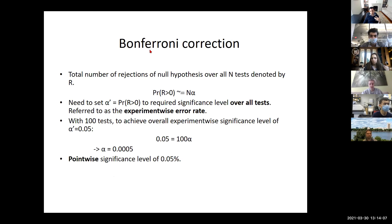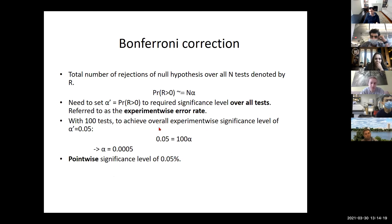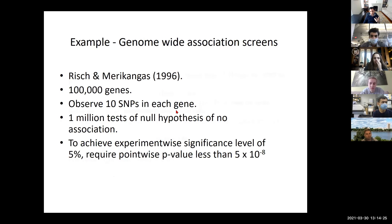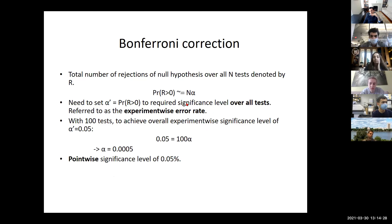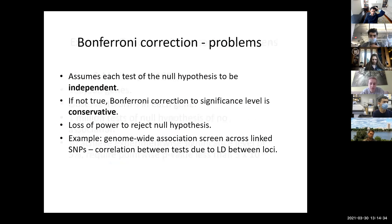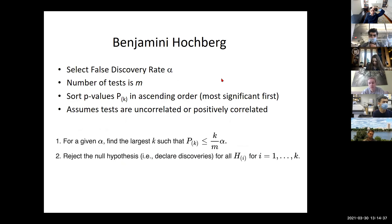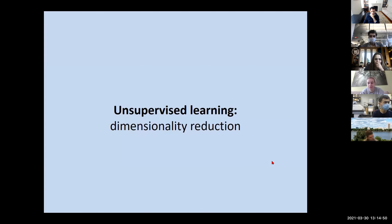You can correct for the number of hypotheses you're testing using Bonferroni correction, which asks: given the number of hypotheses tested, what number would you expect to be above a certain significance threshold? Or you can use less stringent corrections that ask how many passed the particular threshold, such as the Benjamini-Hochberg correction, which is based on the p-value observed and the number of tests above a particular p-value.